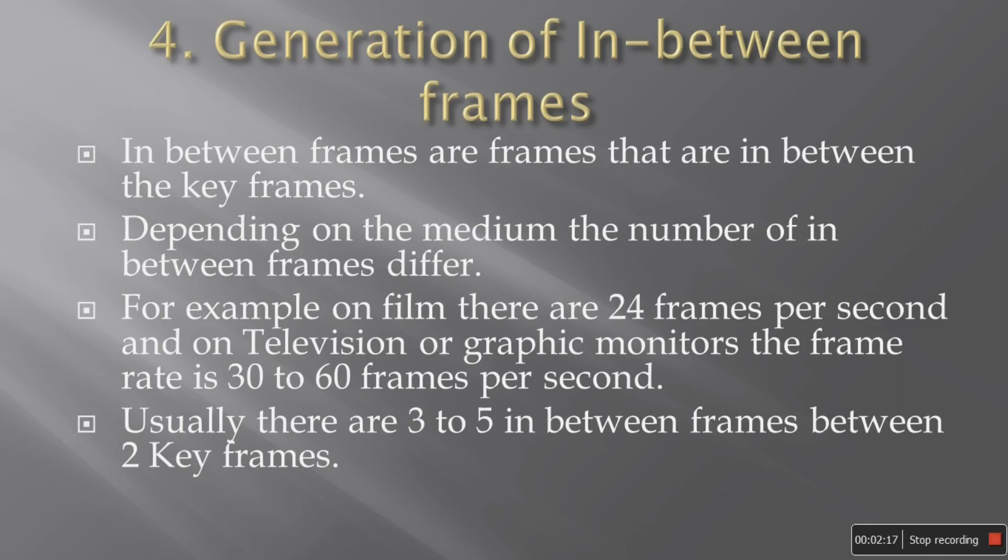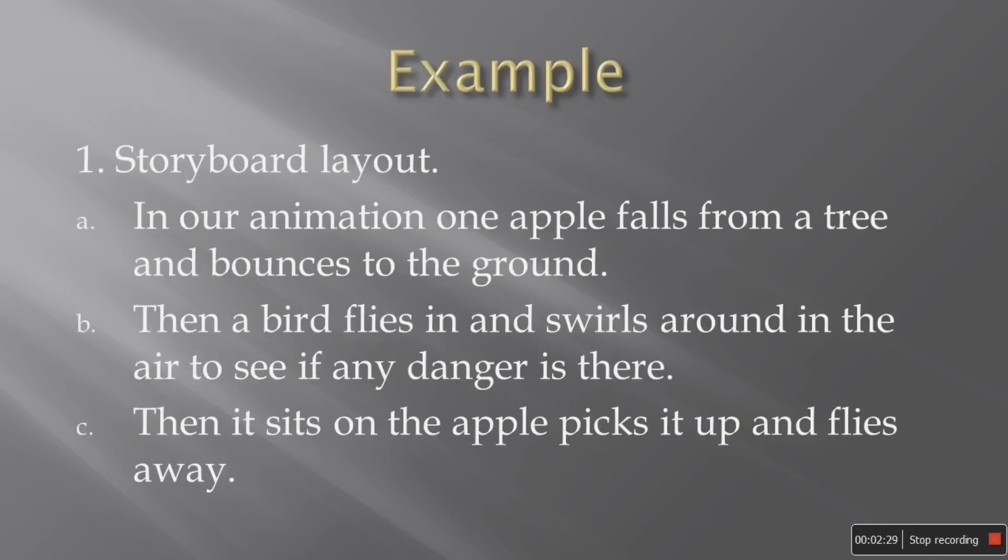For example, on the film, there are 24 frames per second. On television, generally we have 30 to 60 frames per second. So the number of in between frames also increase. So there are around three to five in between frames between two keyframes. So these are the four steps.